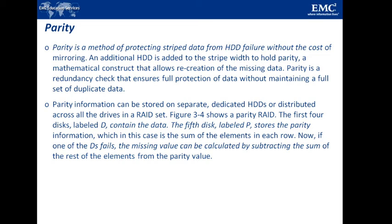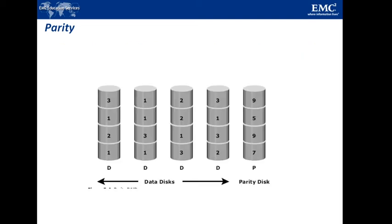Parity is a method to protect striped data from disk failures without the cost of mirroring. An additional disk drive is added to hold the parity — a mathematical construct that allows recreation of missing data. Parity is a redundant technique that ensures protection of data without maintaining a full set of duplicate data, and its calculation is a function of the RAID controller. Parity information can be stored on a separate dedicated disk drive or distributed across the drives in a RAID set. In the figure showing a parity RAID set, the first 4 disks are data disks and the fifth disk stores parity information, which is the sum of the elements in each row.